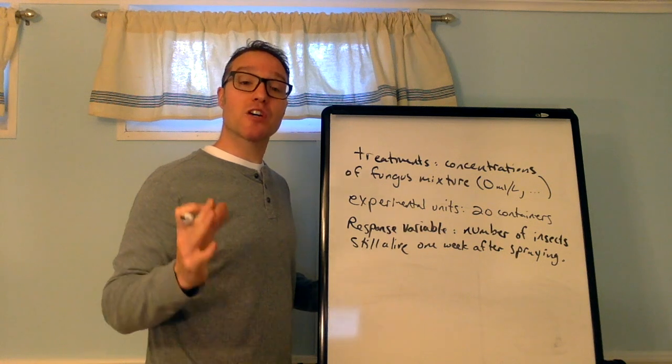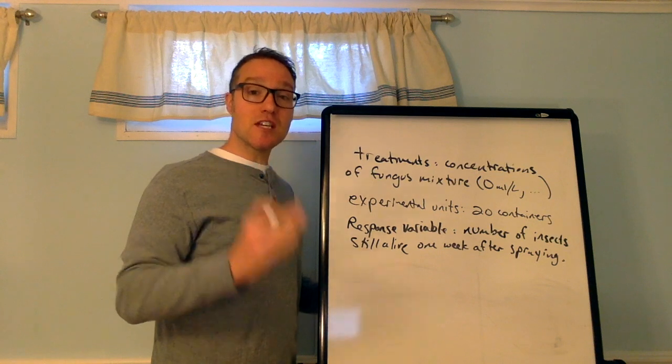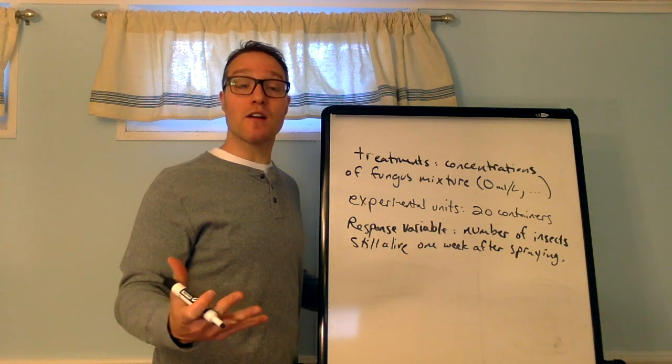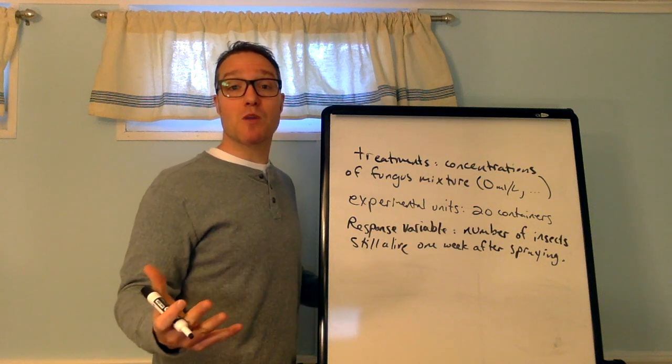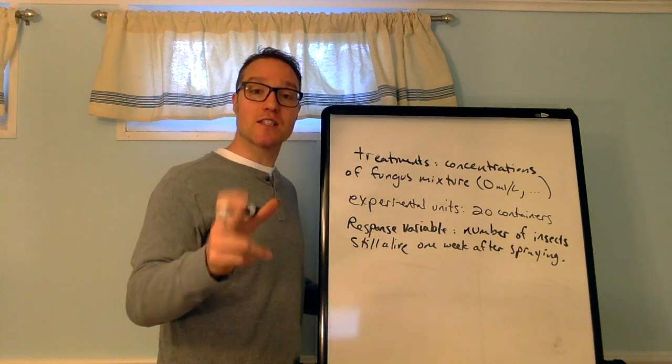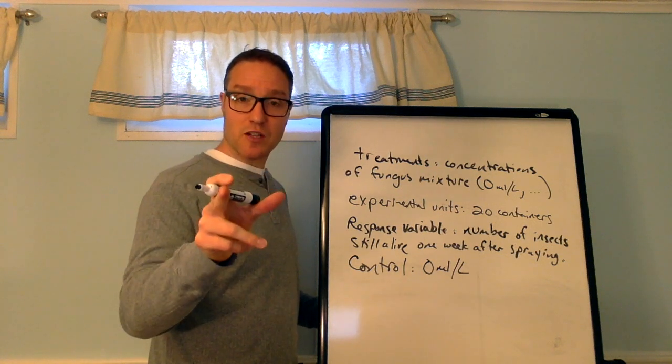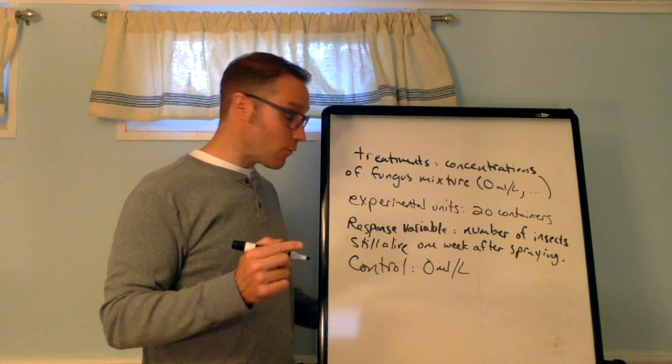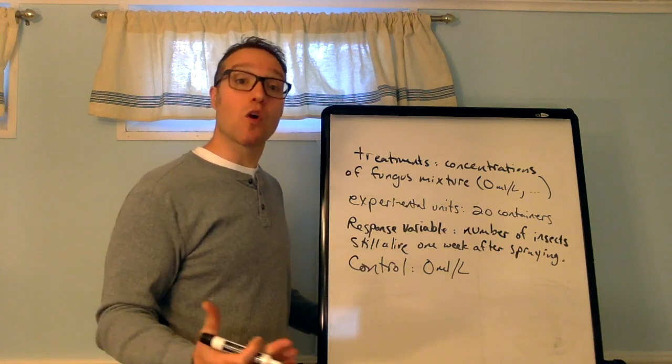Part B says, does the experiment have a control group? Explain your answer. So, the control group here is the group that gets zero milliliters per liter. That's no fungus, right? So, I don't know. Maybe they are spraying water to see if the effect of just being bombarded with some liquid has some effect. They didn't say that. But that might be a smart thing to do. But the control group here is the fungus mixture containing zero milliliters per liter. In fact, now that I think about it, they're creating four different concentrations of fungus mixtures. They probably still are spraying, but it has zero milliliters per liter of fungus mixture in it. So, that would be the control group. And when it says, explain your answer, you have to write a complete sentence. So, you would say what I said in words just now.